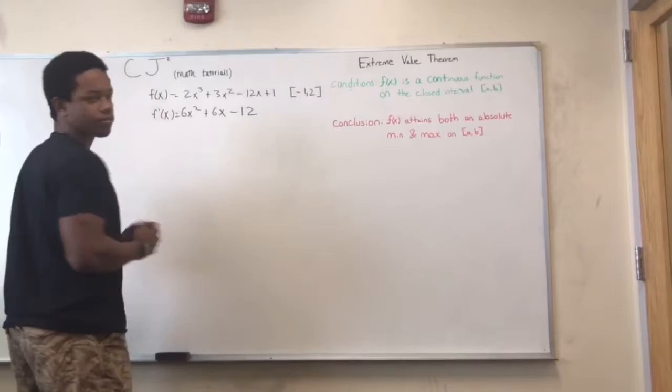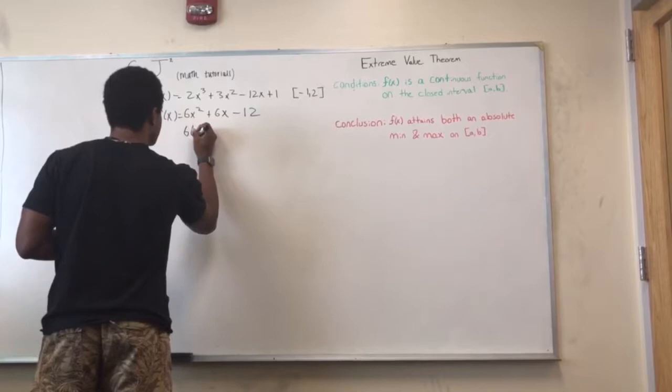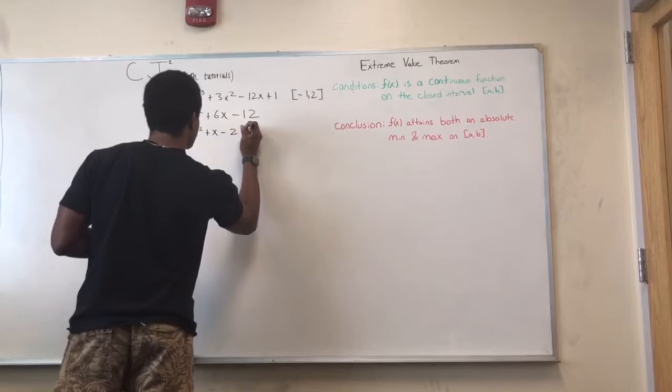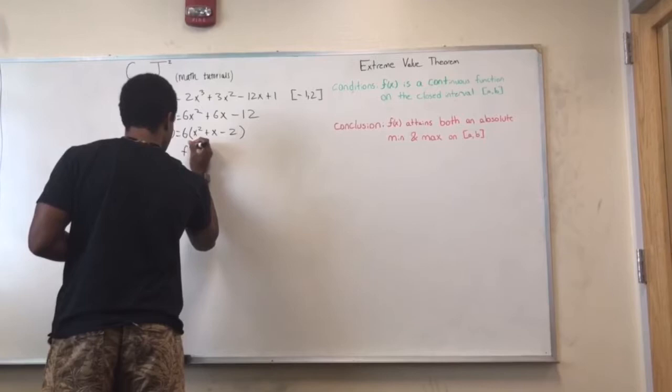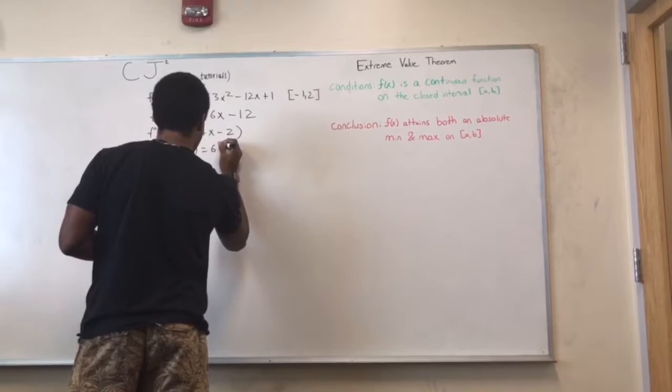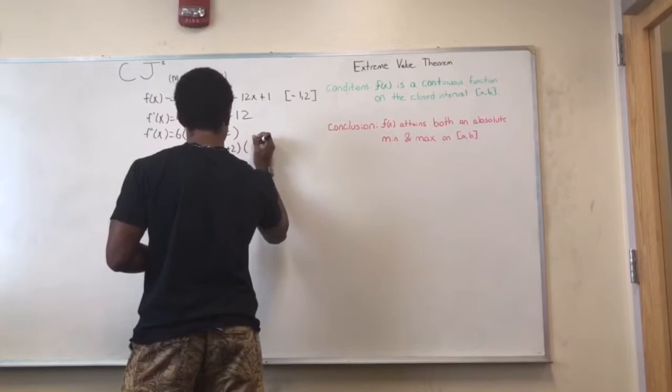And we can find a common factor of 6 in this function. And we can factor it further and we'll see that F prime of X will be equal to 6 times X plus 2 times X minus 1.